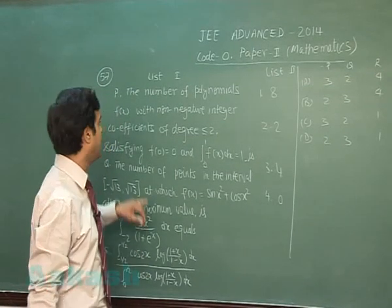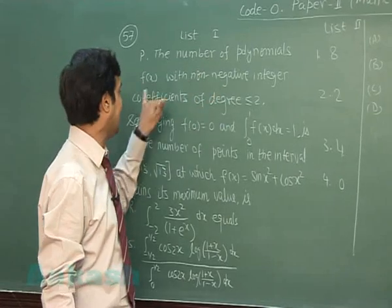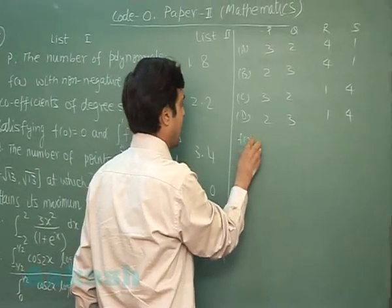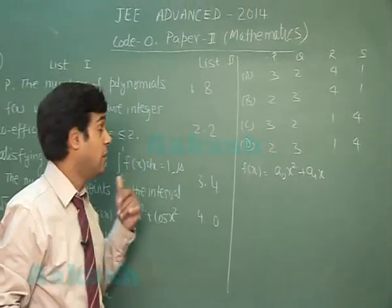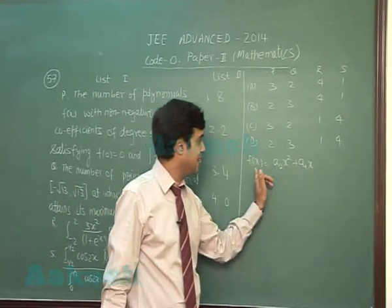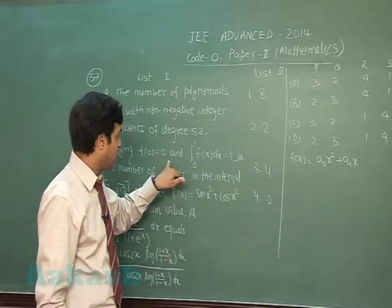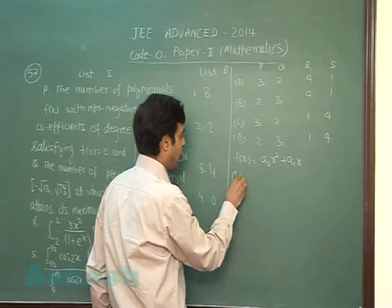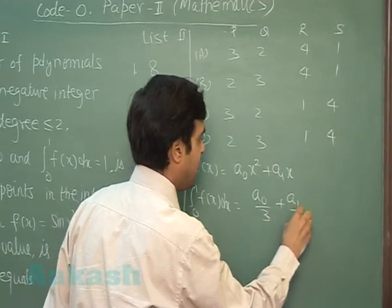Let's go for the next one, which is matching-based. There are two lists. First, the number of polynomials f(x) with non-negative integer coefficients of degree less than or equal to 2. Let's consider f(x) as a₀x² + a₁x + a₂. It is given that f(0) = 0, so the constant term is 0. We can write f(x) as a₀x² + a₁x. They are saying f(0) = 0 and ∫₀¹ f(x)dx = 1, which means a₀/3 + a₁/2 = 1.